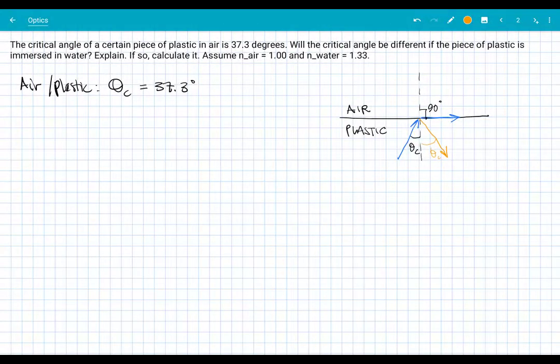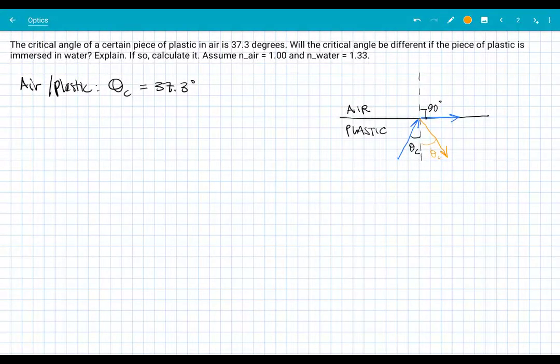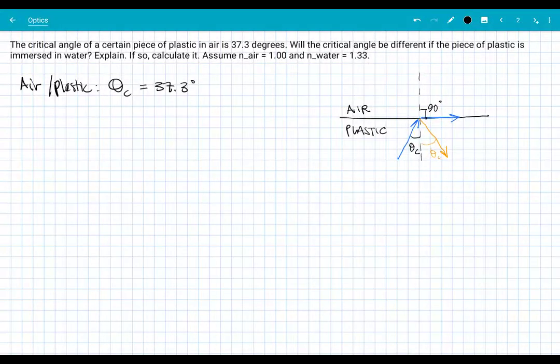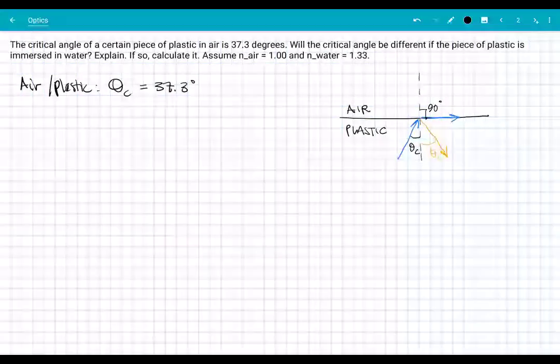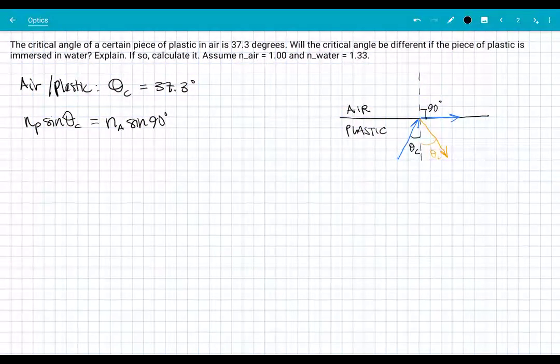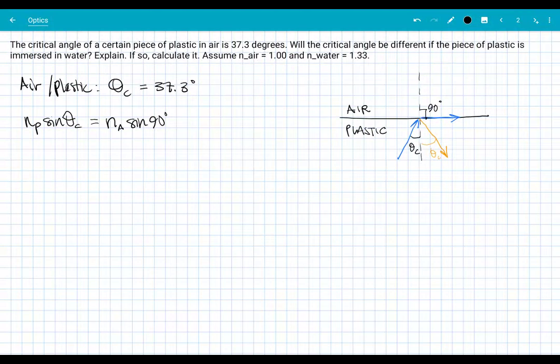Okay, so this information, knowing this angle here, helps me to be able to figure out the n value for the plastic. Because we're given the air and the water but not the plastic, but now that I know the critical angle I can find that. And I can just apply Snell's law here, right? The n value for plastic times the sine of the critical angle is equal to the n value for air, which is my other medium, times the sine of 90 degrees.